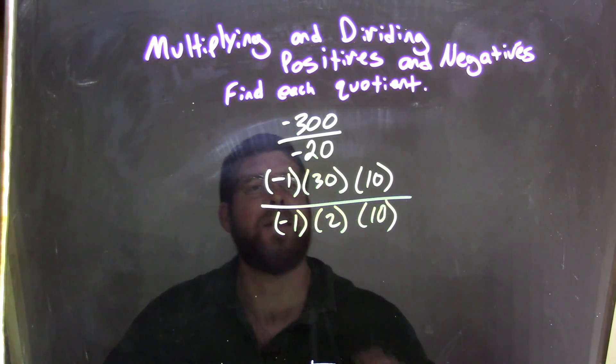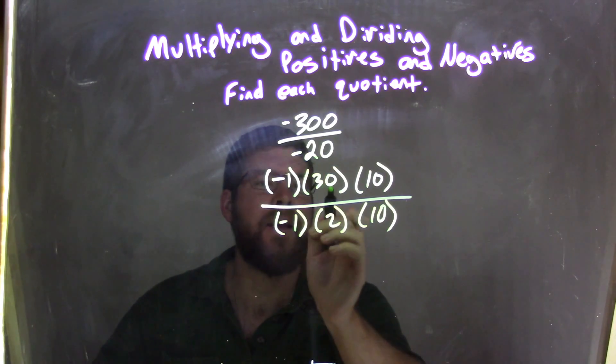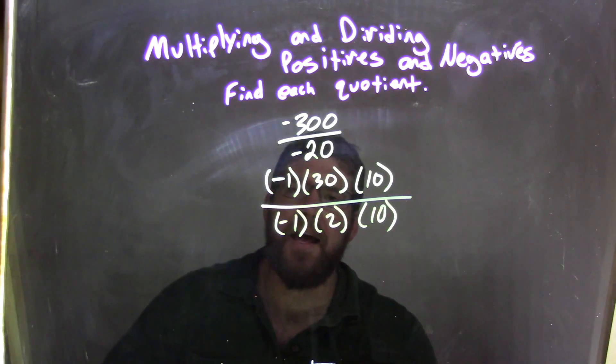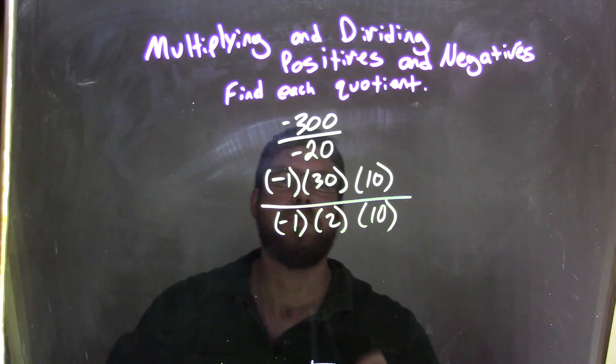What was really going on here is negative 300 is the same thing as negative 1 times 30 times 10, and negative 20 is the same thing as negative 1 times 2 times 10.